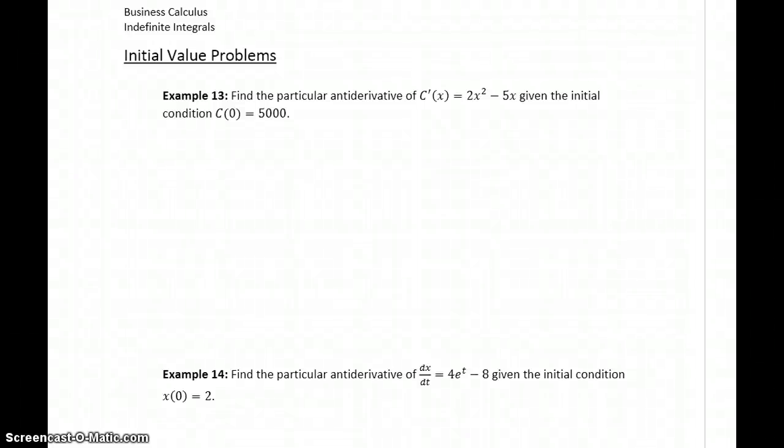In the examples we've looked at so far, we keep getting something of the form F(x) + c. So F(x) is some antiderivative plus that constant c to represent that infinite family of functions that could all be answers.